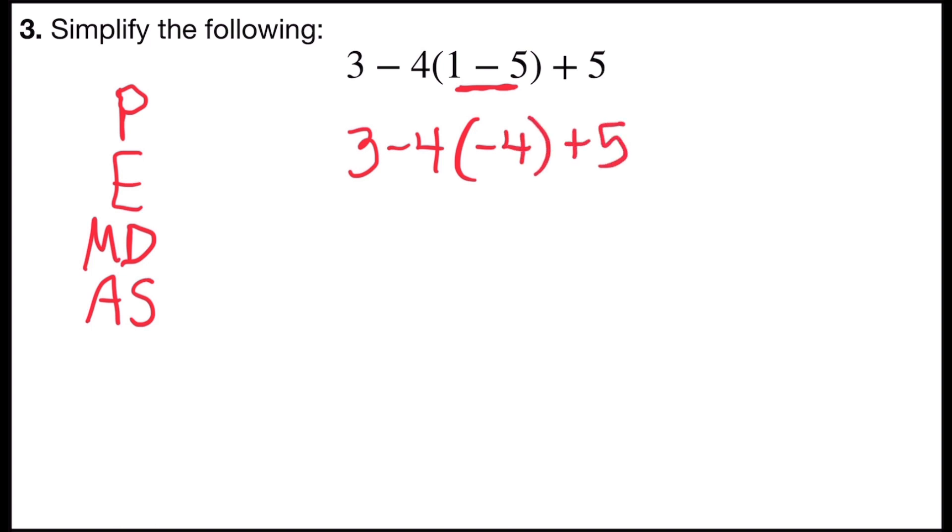Then I can move on to the next step. There are no exponents in this problem, so I'm going to look for multiplication or division as it appears in the problem from left to right. And so I have negative 4 times negative 4, which gives me positive 16.